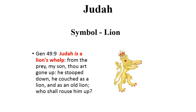Judah would have the symbol of the lion. Reading Genesis 49:9, 'Judah is like a lion's whelp.' You will see the symbol of the lion all over Britain and Europe, because many of the kings of Europe and Britain were from the tribe of Judah.